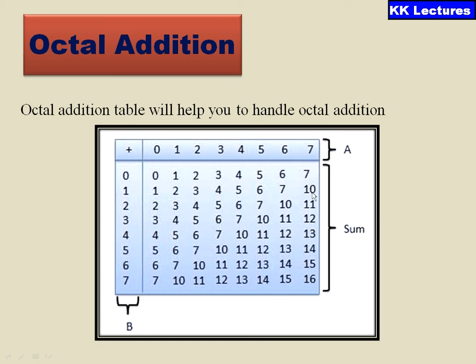Now coming to the second row, 0 plus 1 is 1, 1 plus 1 is 2, 2 plus 1 is 3, and so on. Like that, 7 plus 1 is 10. That is, after 7, we do not have 8, so we are going with the octal addition as 10.